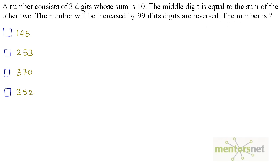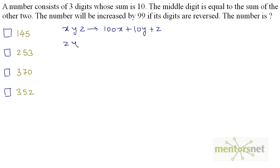We have a three-digit number. Let's consider it as x, y, z and its value will be 100x plus 10y plus z. If the digits are reversed, then the original number is increased by 99. The reversed digits are z, y, and x, so its value is 100z plus 10y plus x.